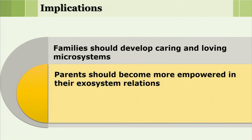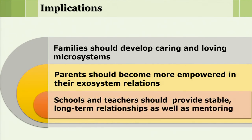Though the child has no control over the exosystem, parents should become more empowered in their exosystem relations and make sure it does not negatively affect the child's development. Schools and teachers should also provide stable and long-term relationships, as well as mentoring wherever it is required.